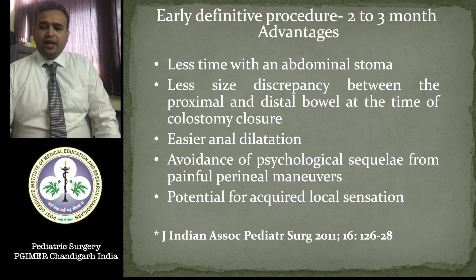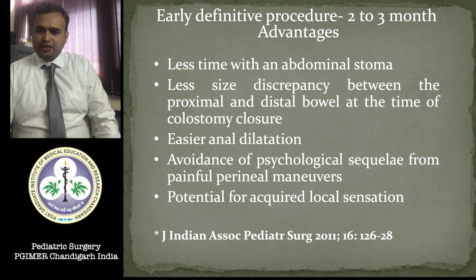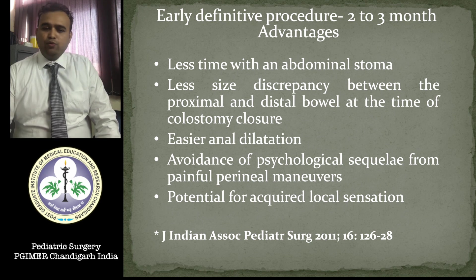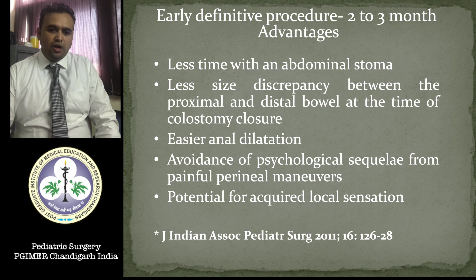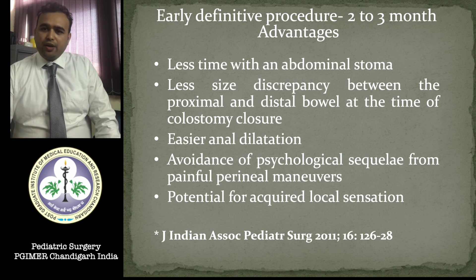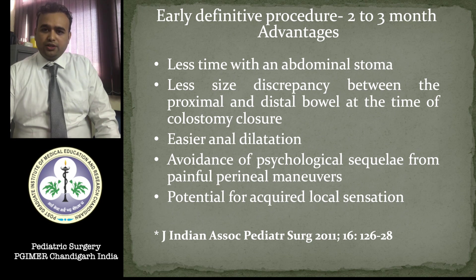Early definitive procedure at two to three months has more advantages: less time with an abdominal stoma, less size discrepancy between the proximal and distal bowel at colostomy closure, earlier anal dilatation, avoidance of psychological stress to the patient and parents, and very good local sensation.